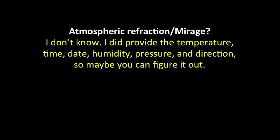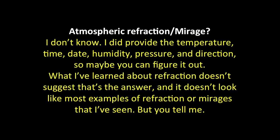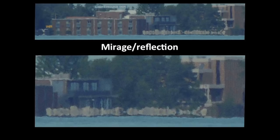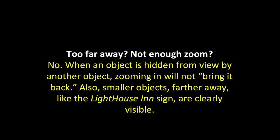Atmospheric refraction or mirage? The study of optics is pretty complicated. I did provide the temperature, date, time, humidity, pressure, and direction, so maybe that'll help figure it out. What I've learned about refraction doesn't suggest that's the answer, and it doesn't look like most examples of refraction or mirages I've seen — but please tell me what you think. A mirage is merely a reflection, and I do have a picture from the inn that clearly shows a reflection — my experiment photos do not look like that. Lens distortion? No — lens distortion only changes the shape of objects; it doesn't make them disappear. Too far away or not enough zoom? No — zooming in won't bring back an object hidden behind another object, and smaller objects farther away like the lighthouse sign are clearly visible where the rocks are not. Photoshop? I did not use Photoshop.